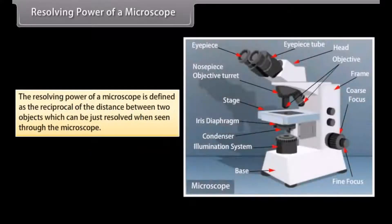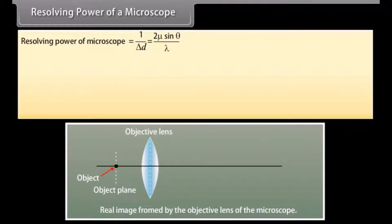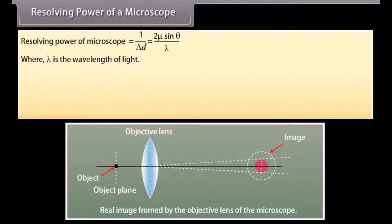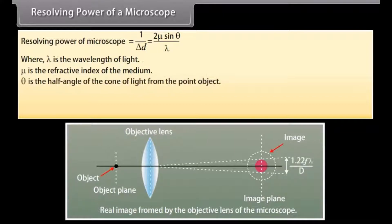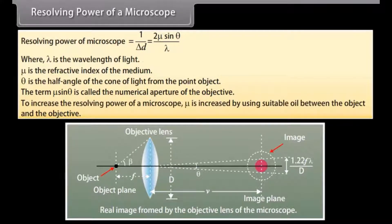The resolving power of a microscope is defined as the reciprocal of the distance between two objects that can just be resolved: 1/δd = 2μ sin θ / λ, where λ is the wavelength of light, μ is the refractive index of the medium, and θ is the half-angle of the cone of light from the point object. The term μ sin θ is called the numerical aperture. To increase resolving power, μ is increased by using suitable oil between the object and the objective.